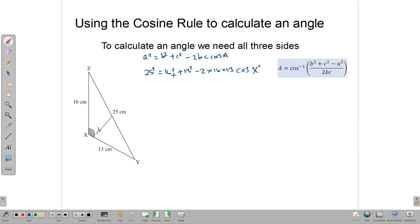Once we're here, we can do a little bit of transposing. So we have 25 squared minus 16 squared minus 13 squared, and that would be equal to minus 2 times 16 times 13 cos X. All of this over here works out to 200 is equal to negative 416 cos X.